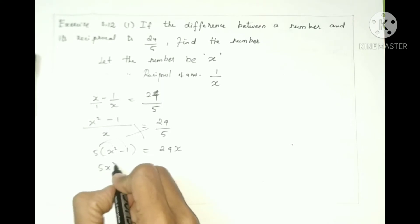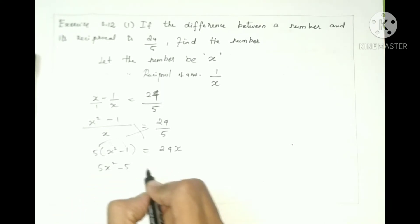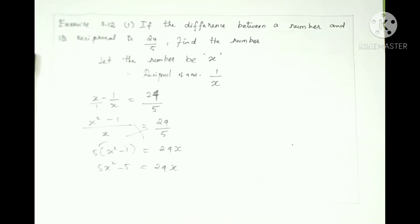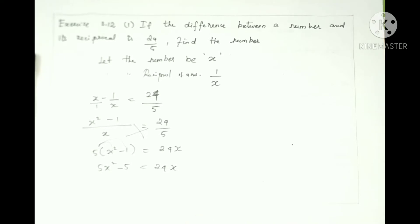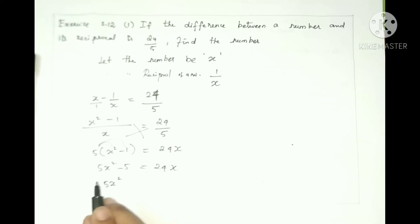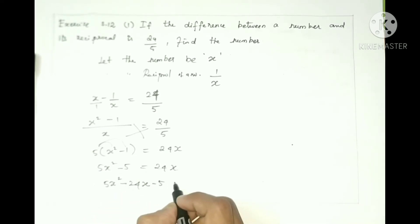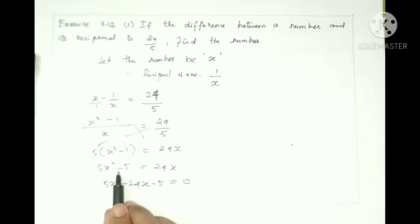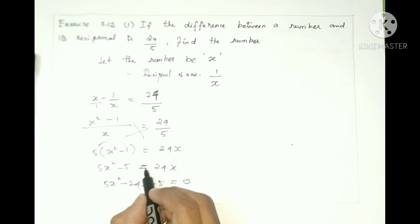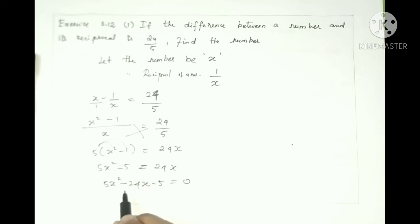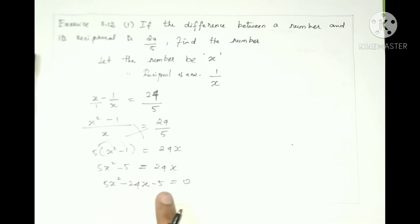So 5x squared minus 5 is equals to 24x. Now we have a quadratic equation. All terms move to one side to equal zero. So 5x squared minus 24x minus 5 is equal to 0. The sign changes because the terms move to the other side.